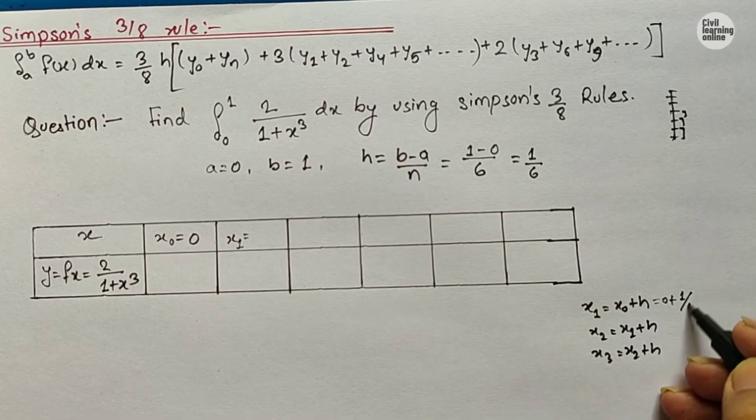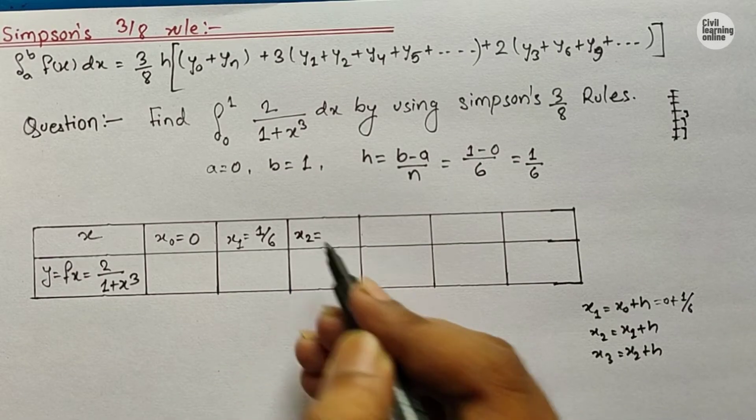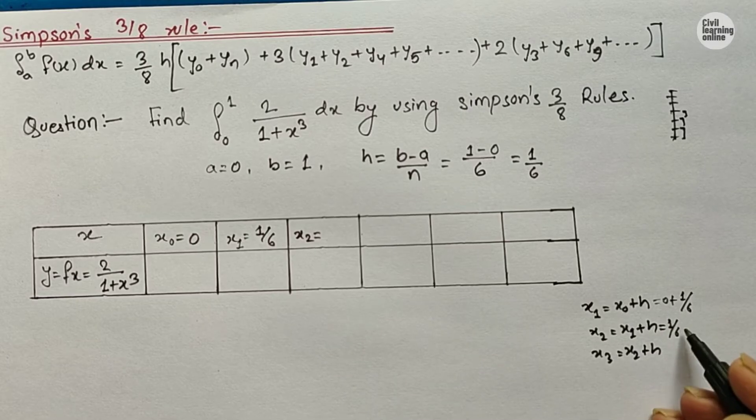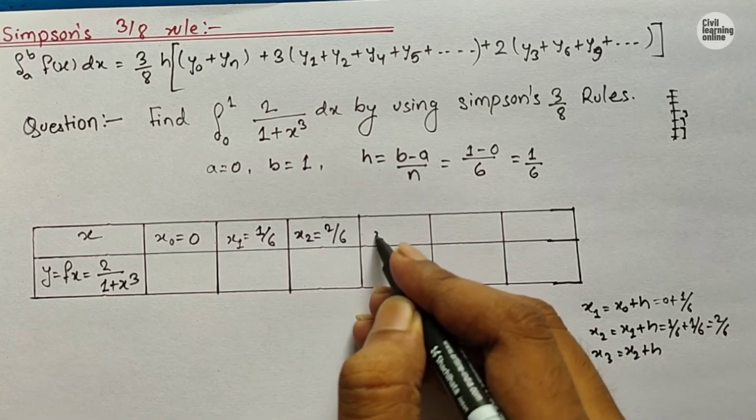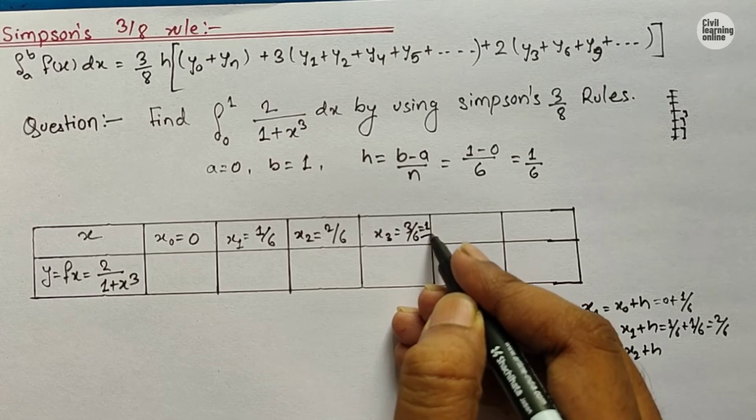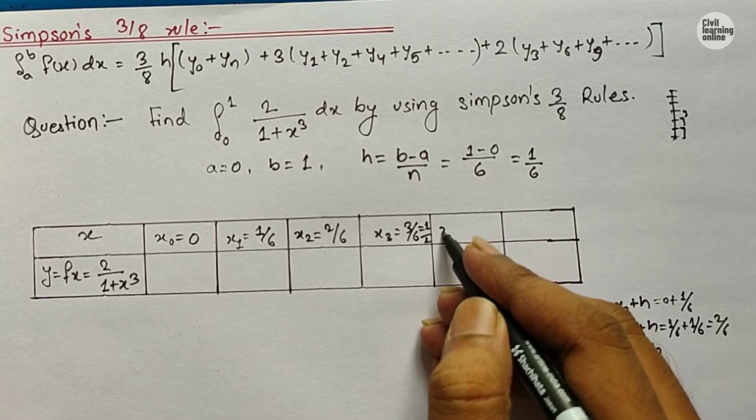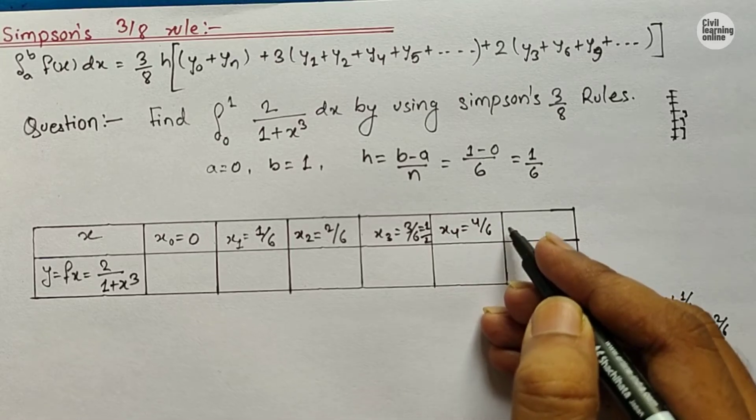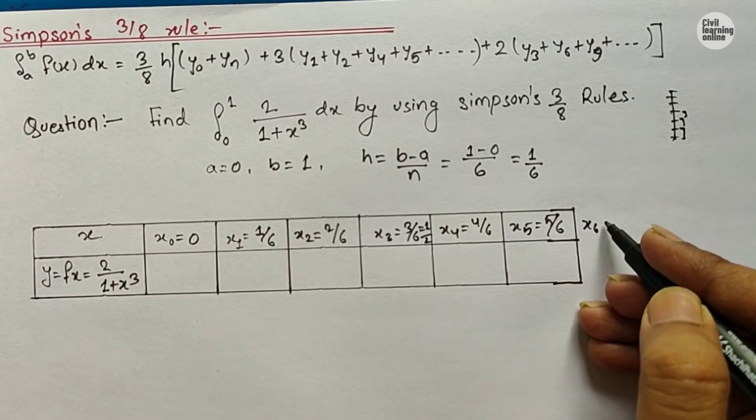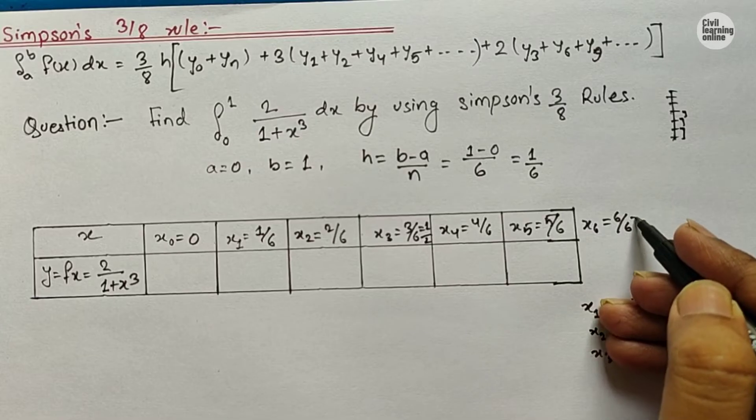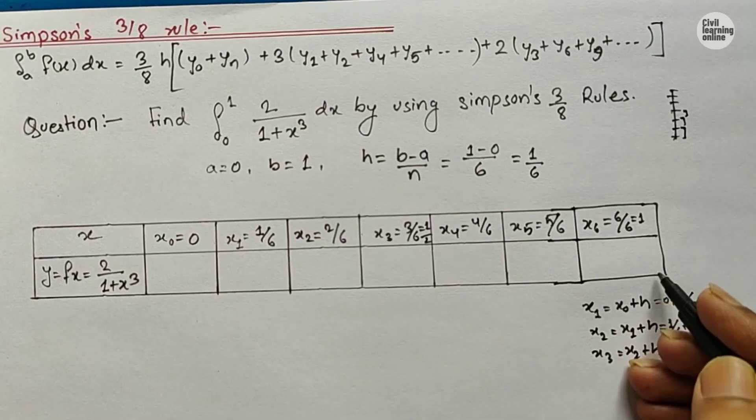Now for x1, put the value of x0 equals 0 plus h, which is 1/6. So our x1 will be equal to 1/6. Similarly, x2 will be equal to x1 plus h equals 1/6 plus 1/6, which equals 2/6. So put here 2/6. Similarly, x3 will be equal to 3/6, which equals 1/2. And x4 will be equal to 4/6. x5 will be equal to 5/6. And here one more we will have x6 also. x6 will be equal to 6/6, which equals 1. Let me increase the table length.